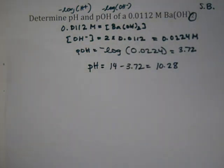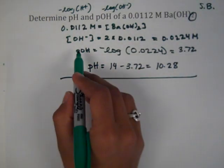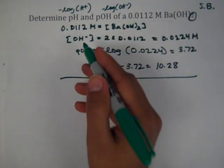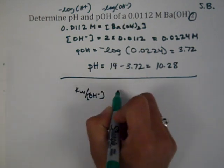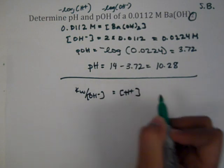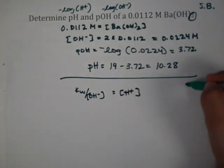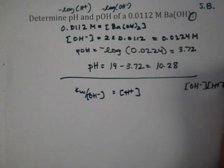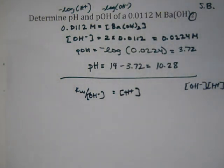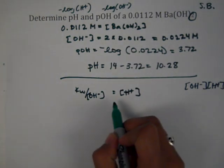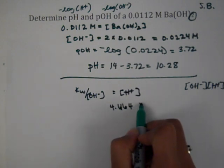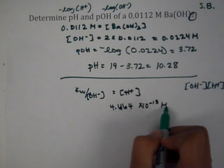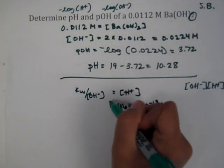Another way to work the problem is we could have taken, instead of going to pOH directly, KW divided by OH concentration to get hydronium H plus concentration. Because concentration of OH minus times H plus equals KW. We could have solved for H plus concentration there, and that would have been 4.464 times 10 to the negative 13 molar.